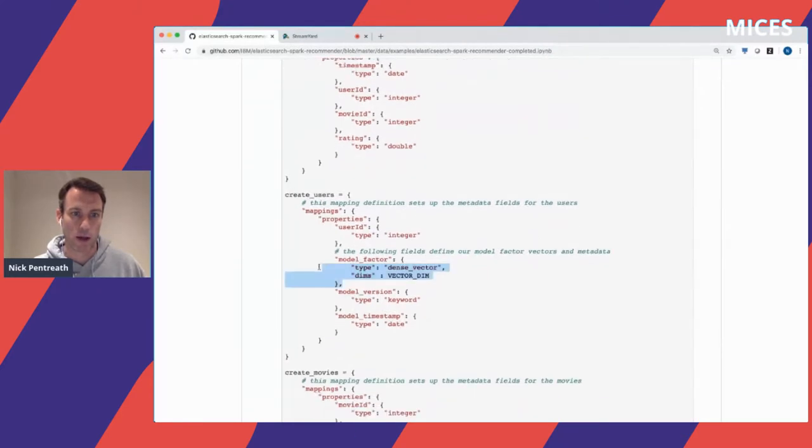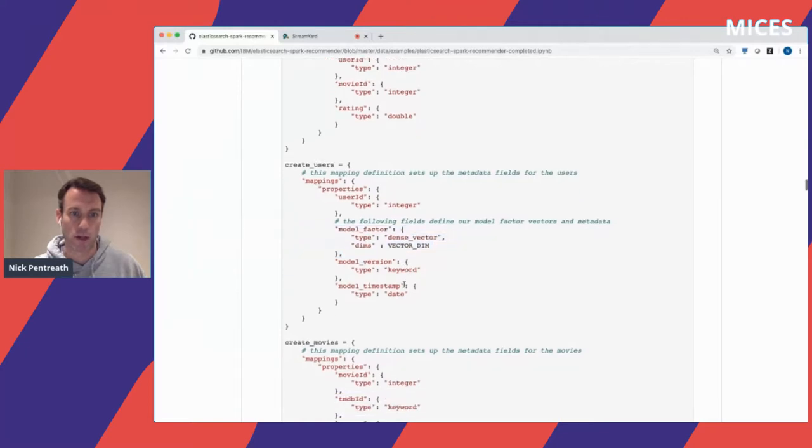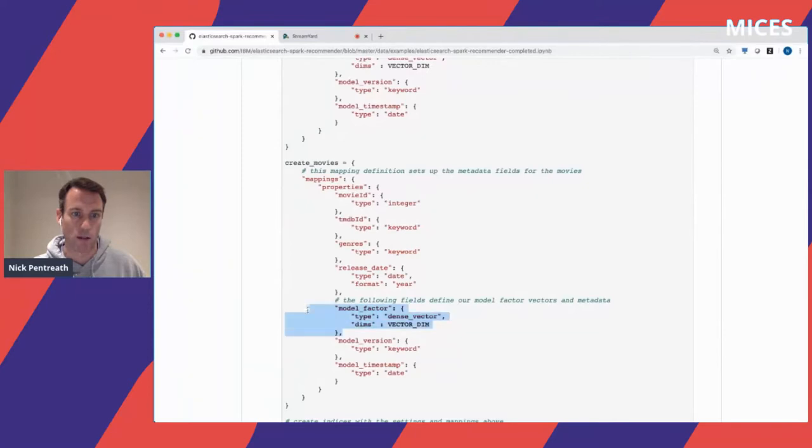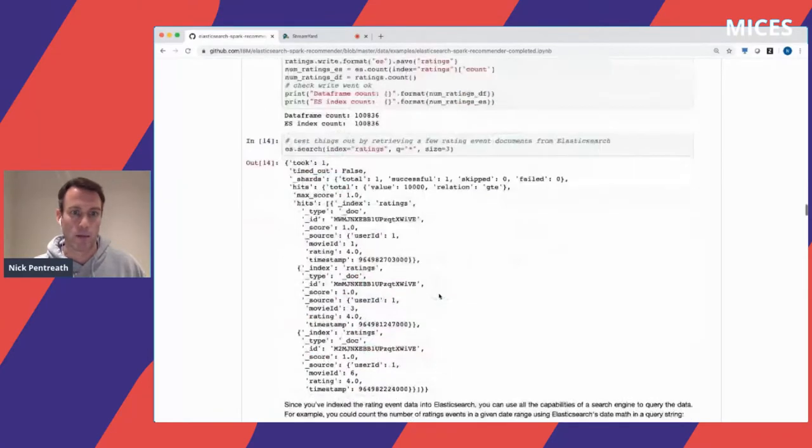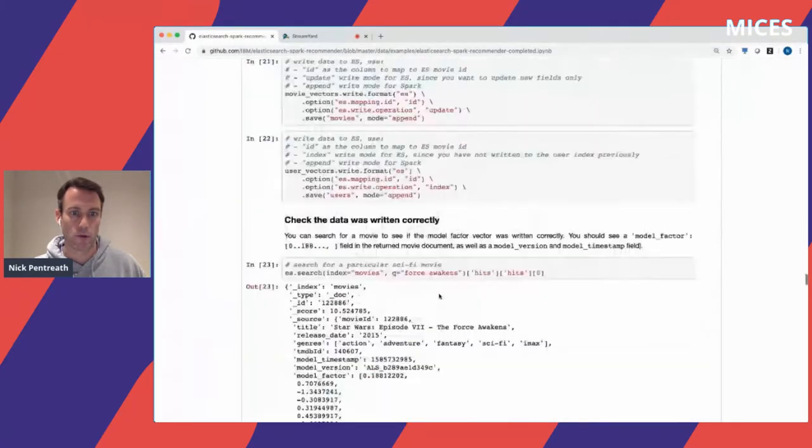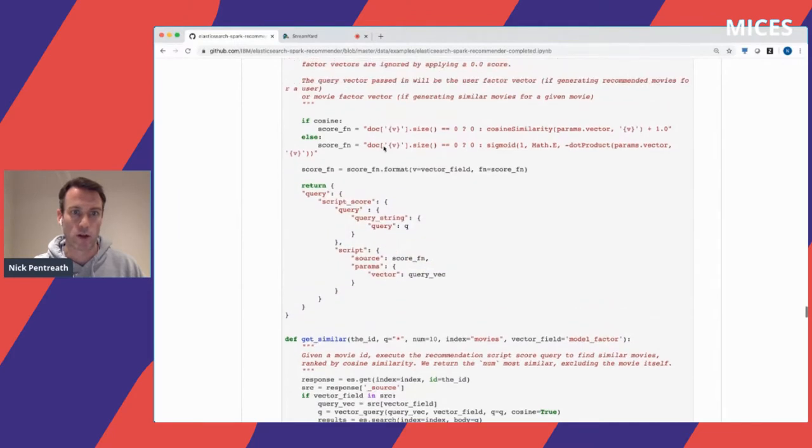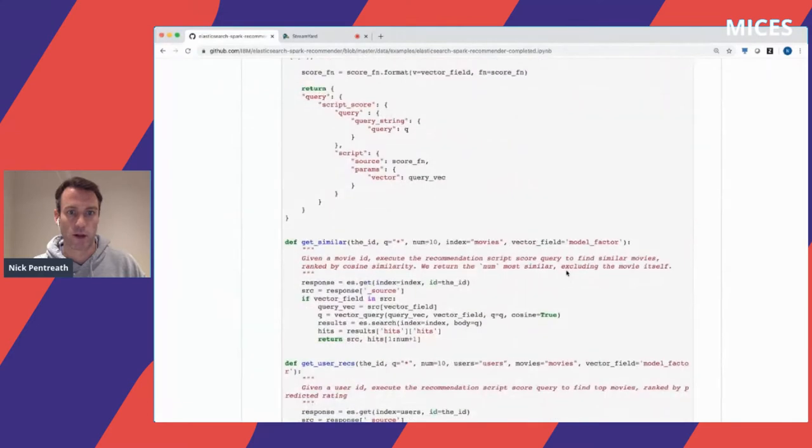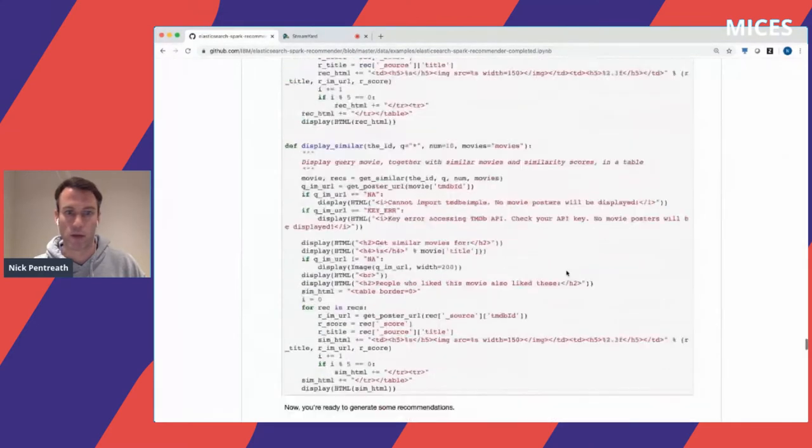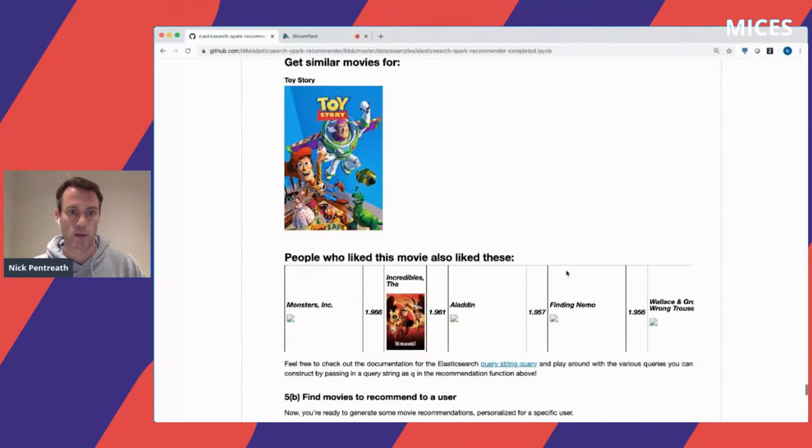The key here that I want to highlight is that, as you see, we can simply create a vector type for users which specifies the dense vector type and the dimension, and similarly for items or movies in this case. Then all we have to do is plug straight into a standard script score query where the score function is exactly cosine similarity or dot product. That's it. At the end of just using that functionality, we get recommended movies and we get similar movies.